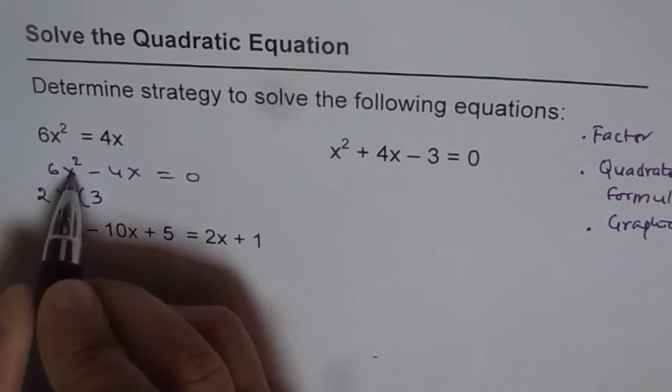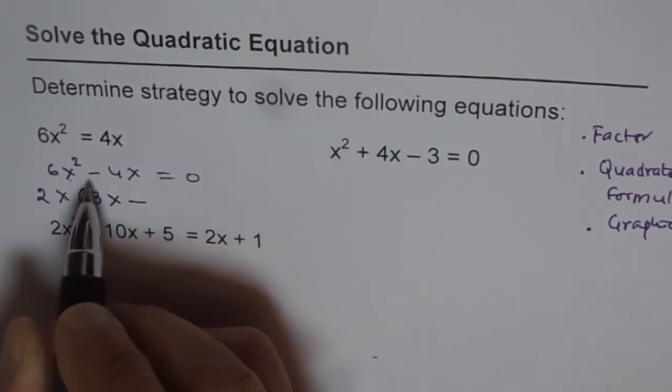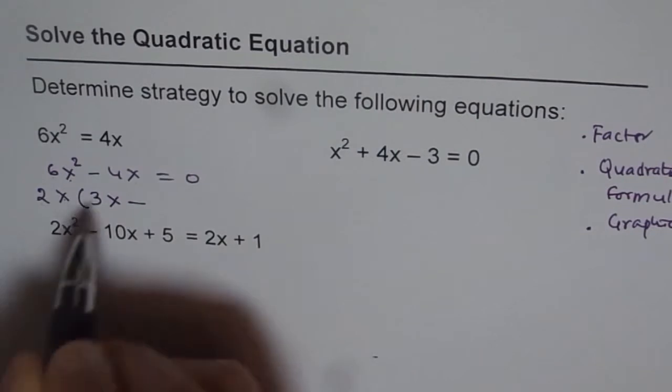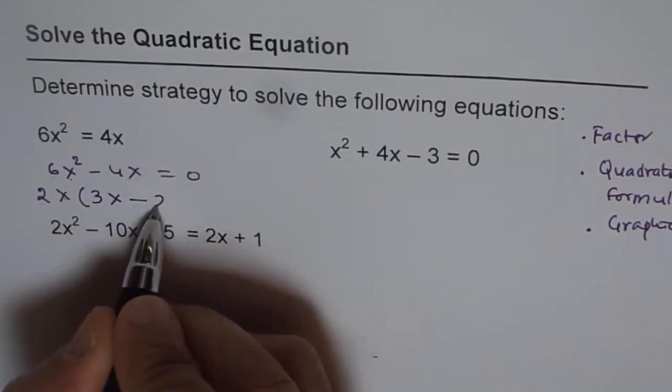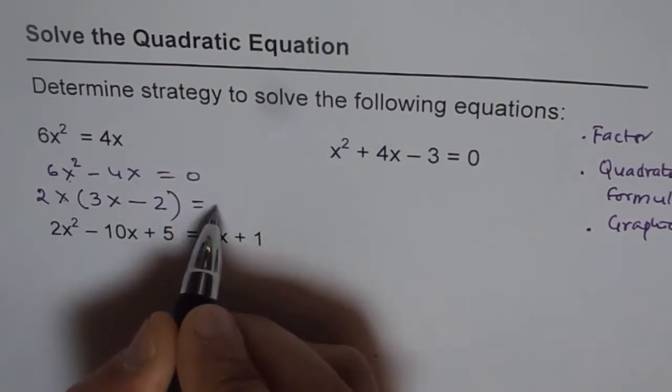Then divide the first term by 2x. So 6 divided by 2 is 3. x² divided by x is x minus. Do the same here. Minus divided by plus is minus. Therefore, we have this minus here. 4 divided by 2 is 2. x divided by x is 1. So we get just the number 2 here equals to 0.